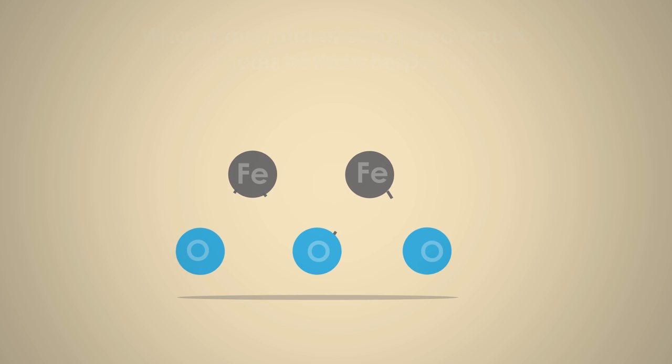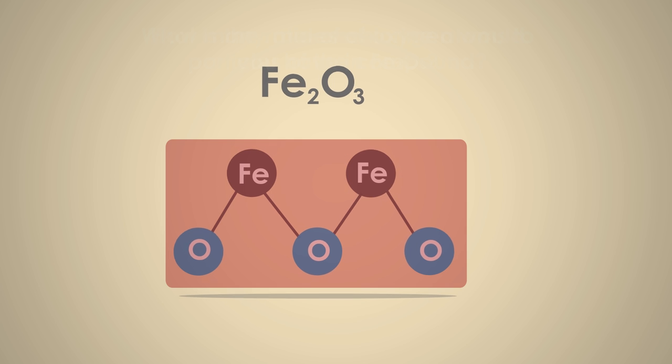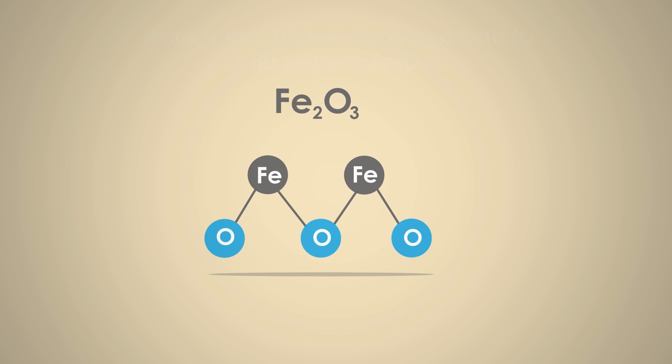What if you had some Fe2O3 instead? For one mole of iron you would have half a mole of the compound, because there are two moles of iron for every one particle of the compound. 1 divided by 2 is one half.